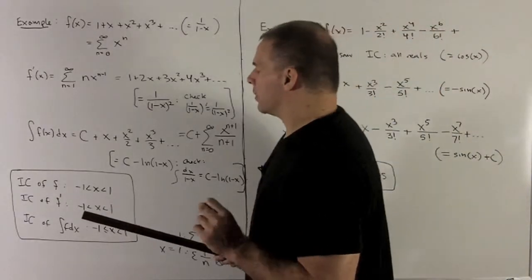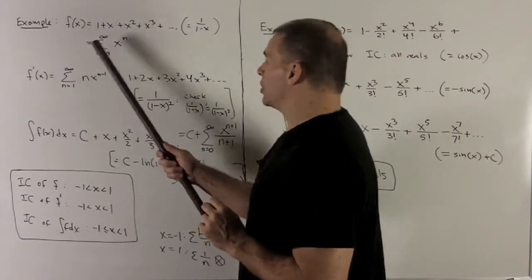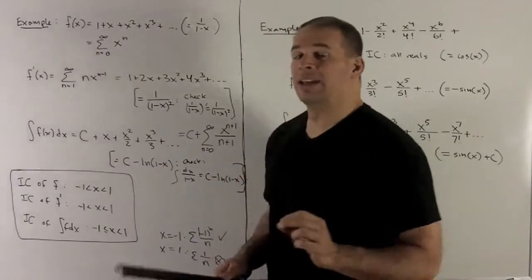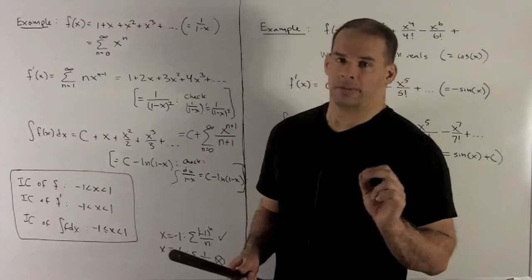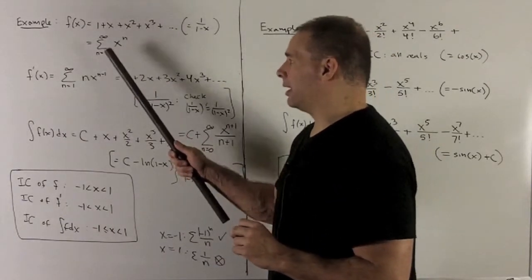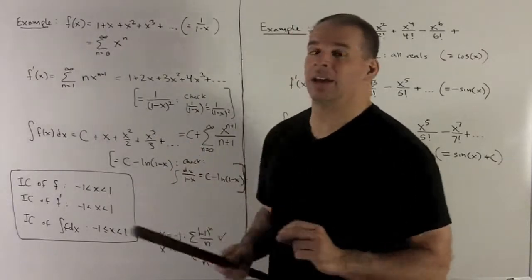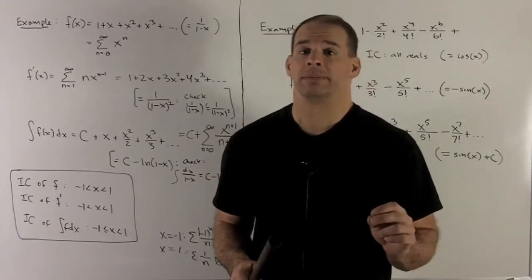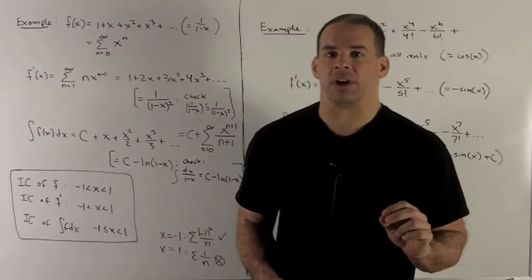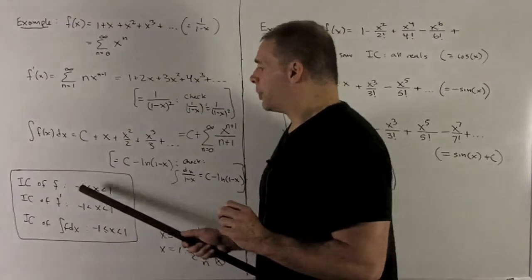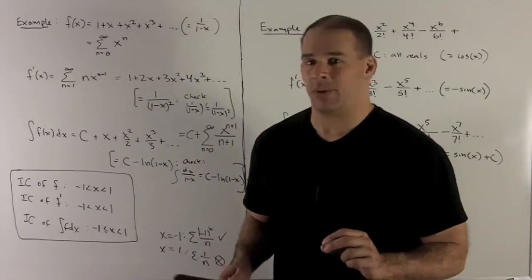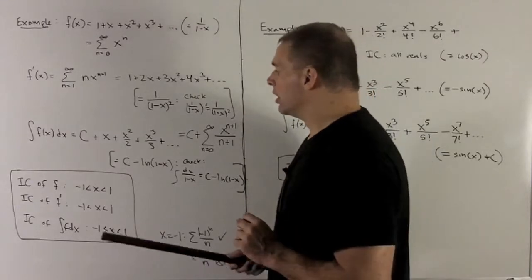Let's check our intervals of convergence. For the original function, we've seen this go from minus 1 to 1, leaving out the endpoints. If you put a 1 in, that's just the sum from n equals 0 to infinity of 1 — that's 1 plus 1 plus 1 plus 1, which definitely diverges. If you put minus 1 in, it just alternates between minus 1 and 1, which also diverges. So no endpoints.